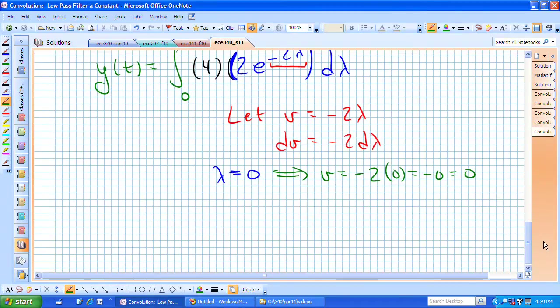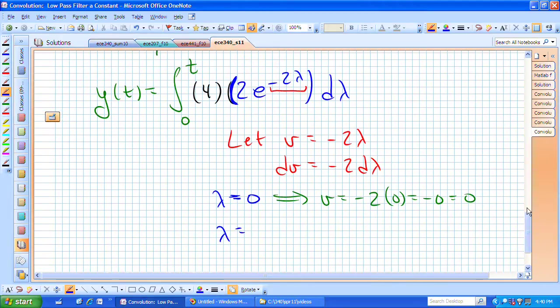What's my upper limit of integration for this new variable v? Lambda was actually t, and if I now use this definition of v, I now have v equals minus 2 t.